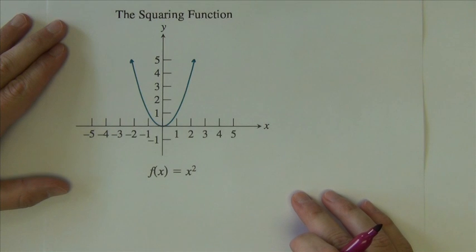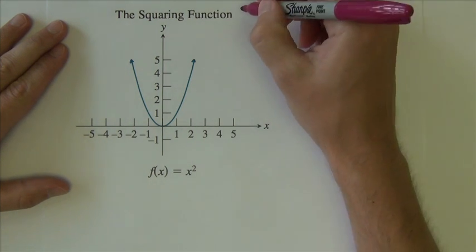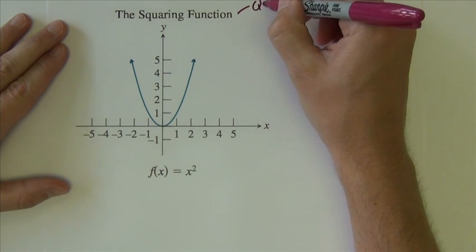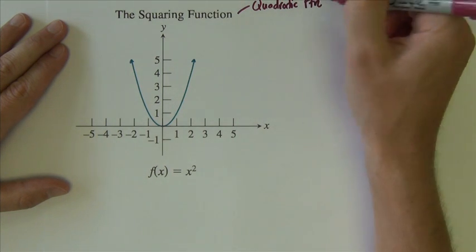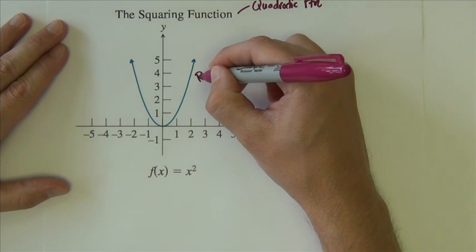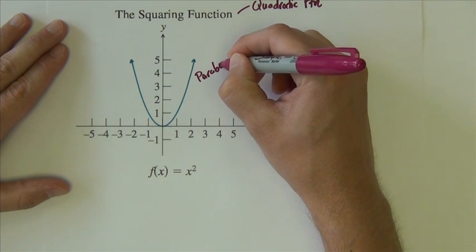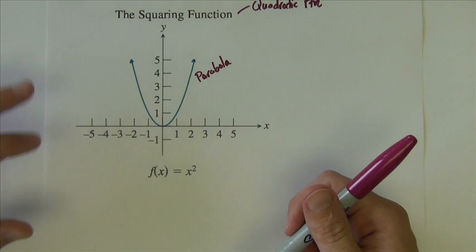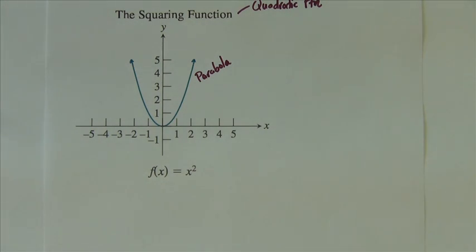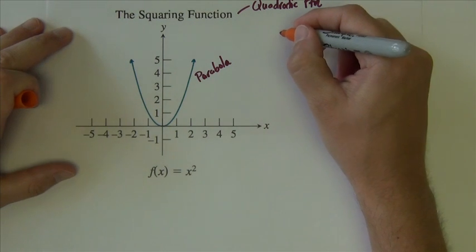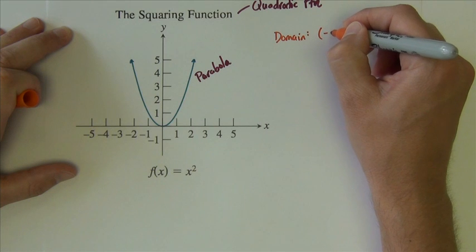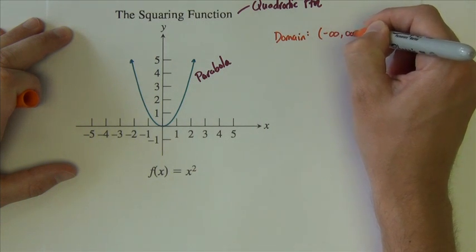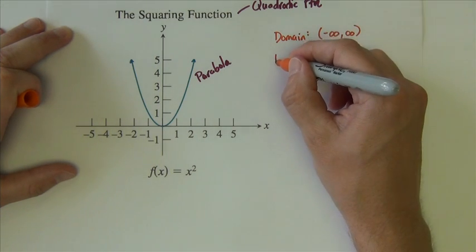Next of our basic functions is called the squaring function, sometimes called the quadratic function. Its graph is called a parabola. It is the function y equals x squared, or f of x equals x squared. Its domain and range—well, its domain will always be negative infinity to positive infinity.